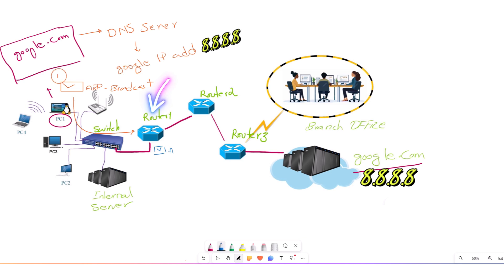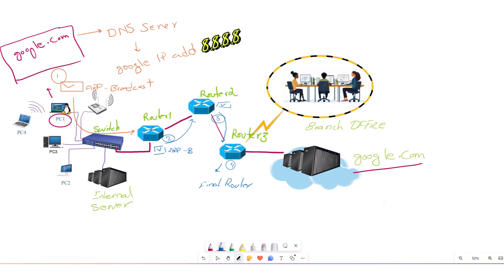Once the default gateway MAC address is found, PC1 sends the packet to the default gateway for further processing. If this router doesn't have information about the next hop, it does the same process and sends an ARP broadcast to find the next hop's MAC address. This continues, forwarding the packet hop by hop until the package reaches the final router attached to the Google server, which may already have Google's MAC address.